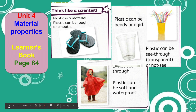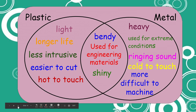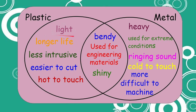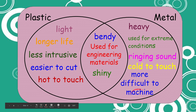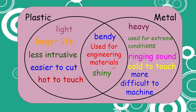Now let's look at the differences and similarities between plastic and metal materials. For plastic: it has a light weight, a longer life, and it is less intrusive. It is easier to cut and not cold to touch. For metal, which we studied last week: it has a heavy weight and is used for extreme conditions. It also has a ringing sound when you hit it, it is cold to touch, and more difficult to cut. Their similarities are that both plastic and metal can be bendy, both are used as engineering materials, and both can be shiny.